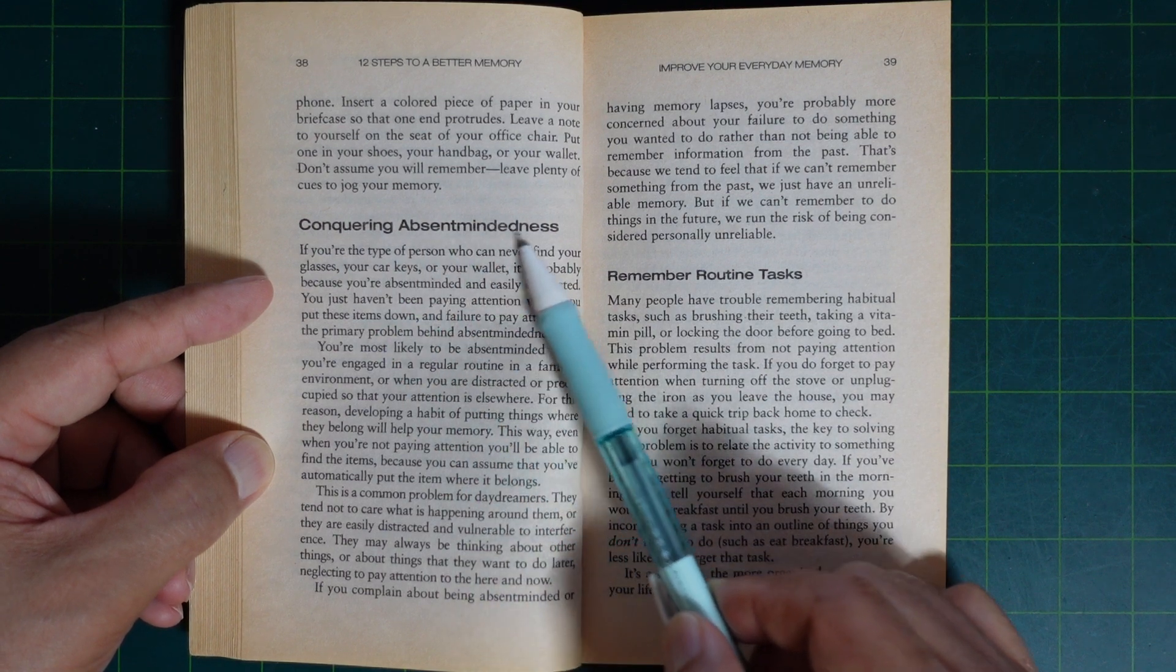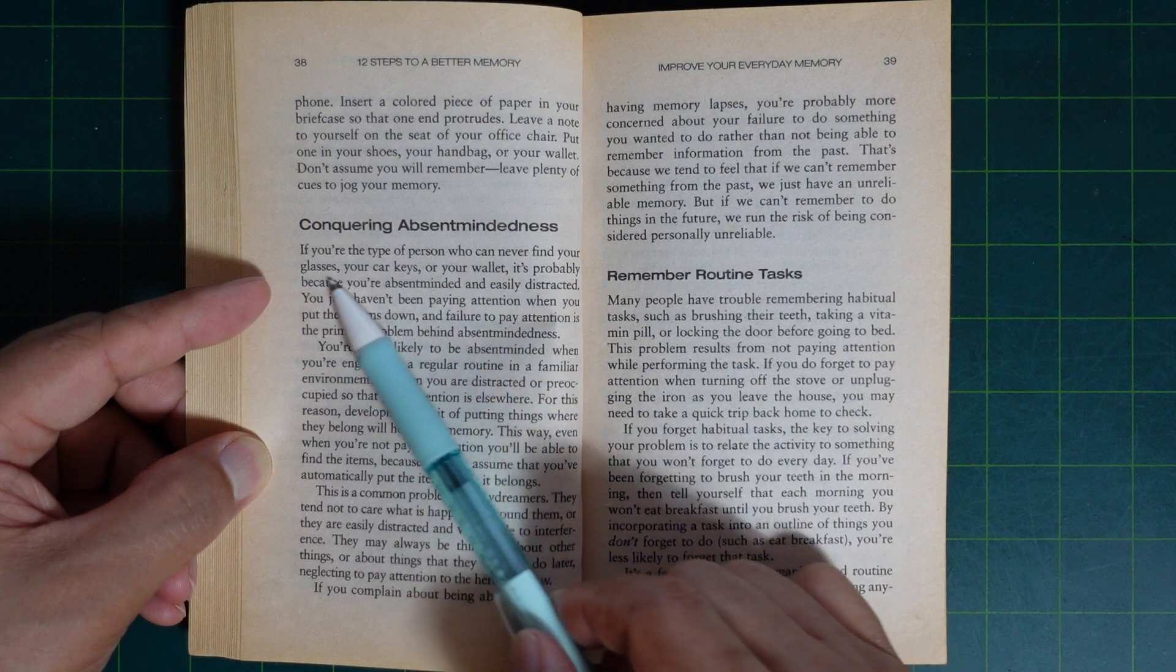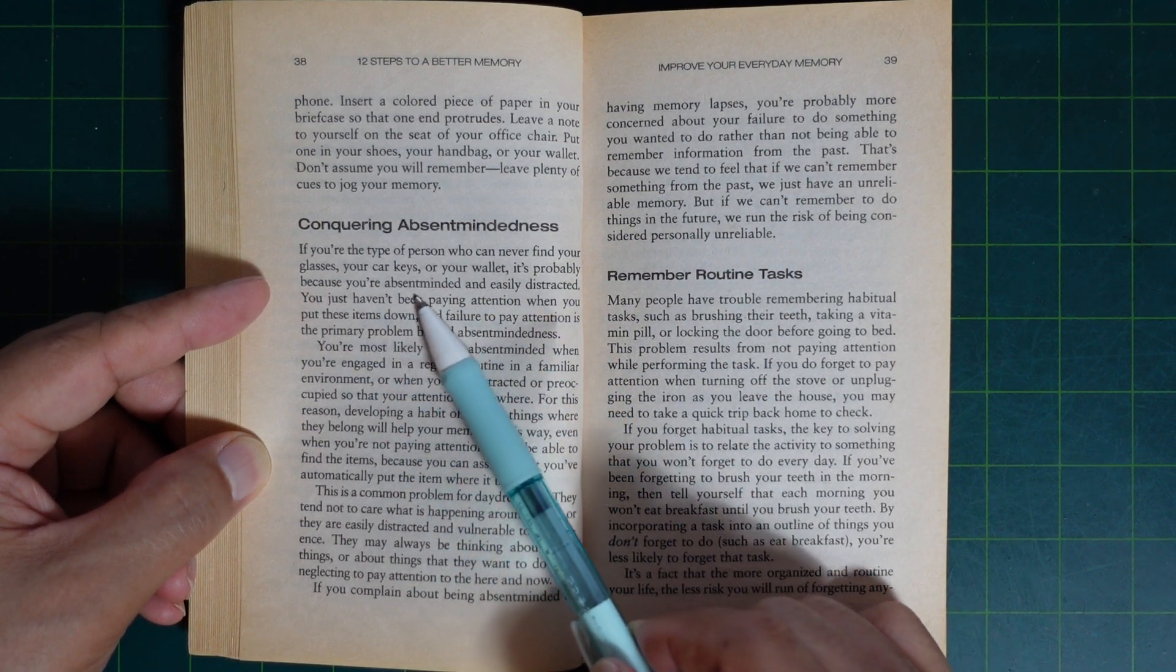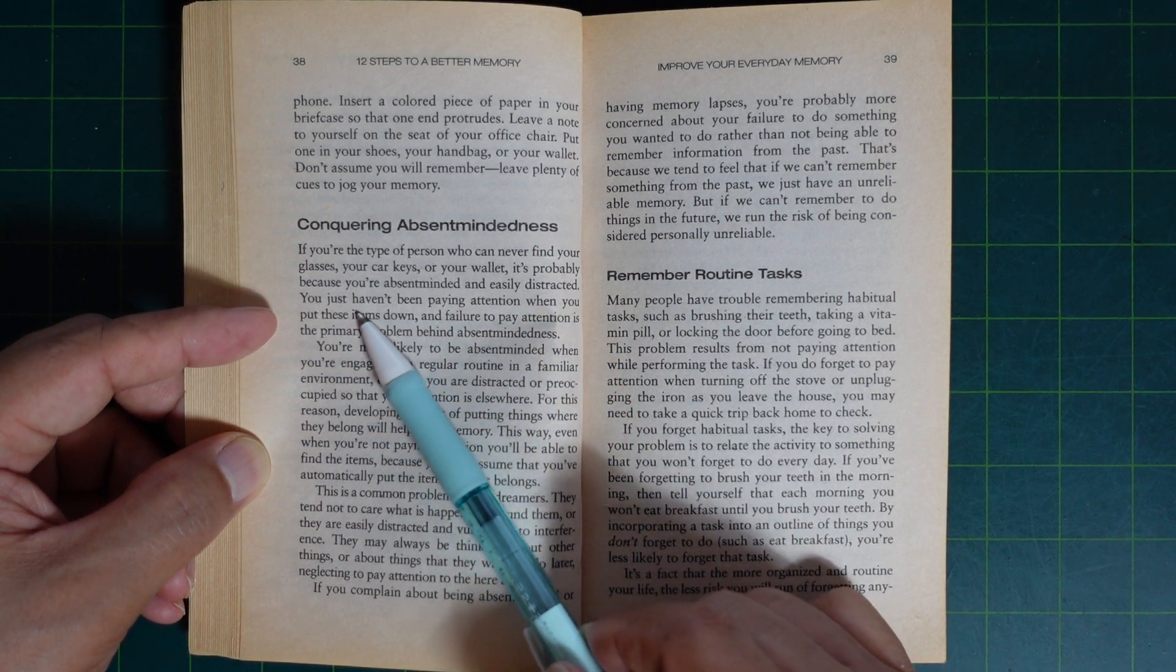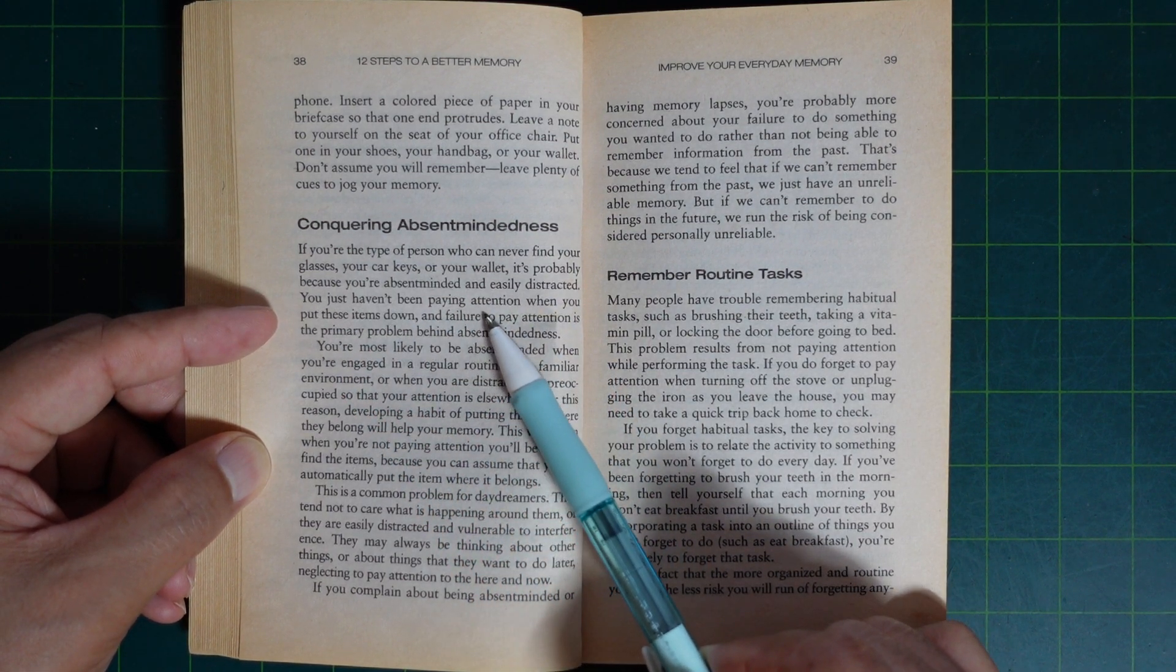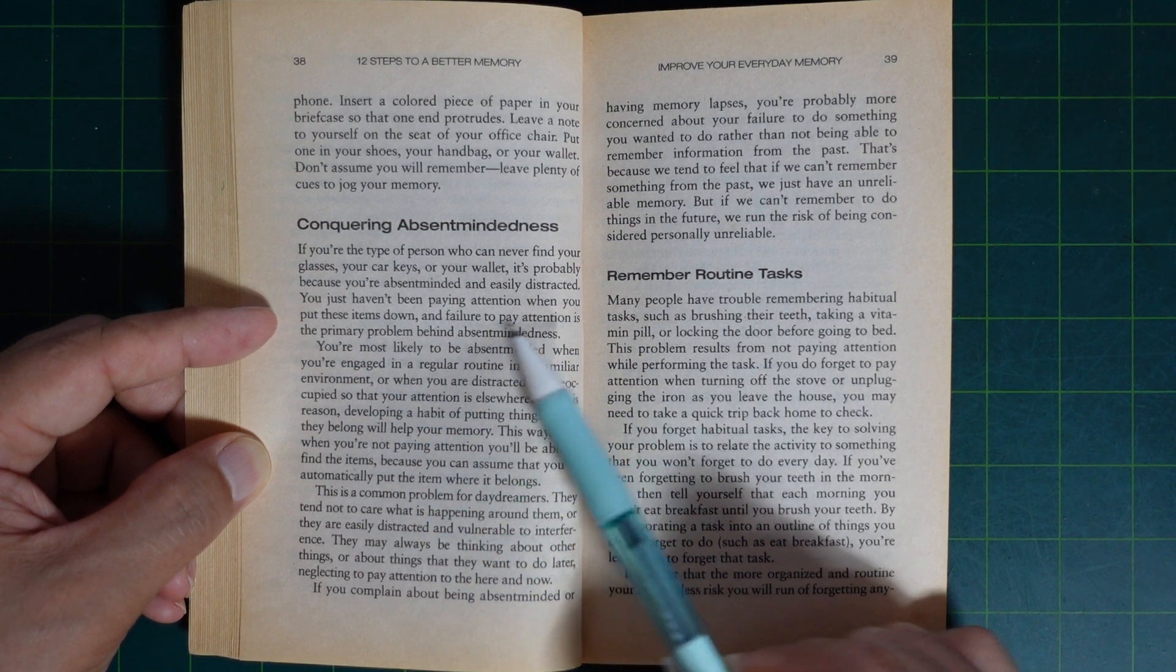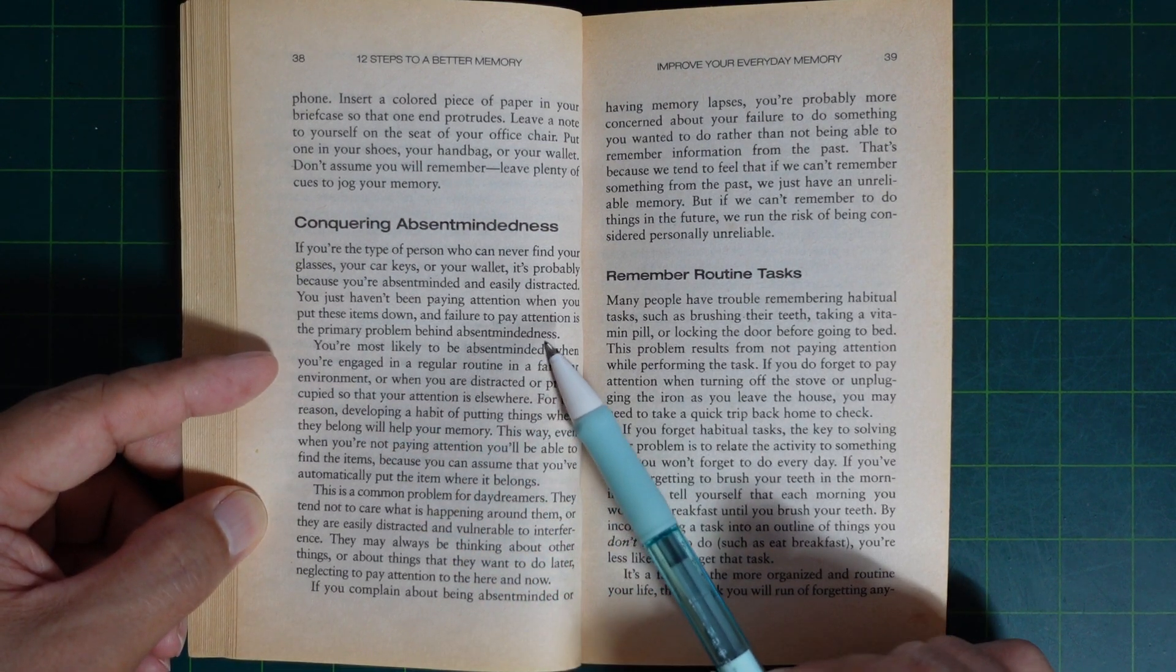Conquering Absent-mindedness. If you are the type of person who can never find your glasses, your car keys, your wallet, you are probably absent-minded and easily distracted. You just haven't been paying attention when you put these items down. The failure to pay attention is the primary problem behind absent-mindedness.